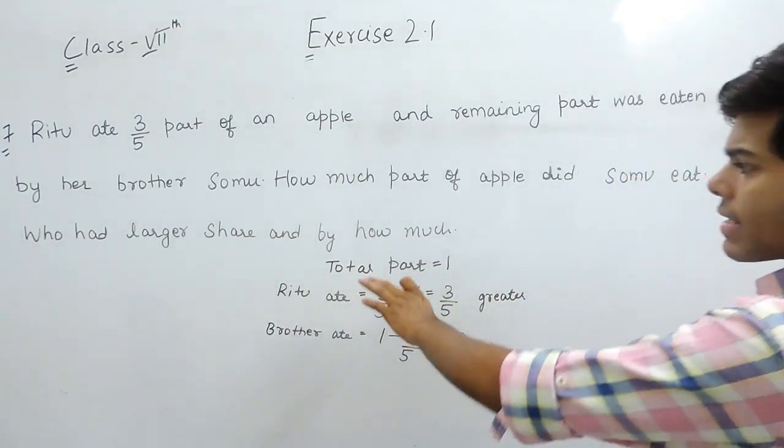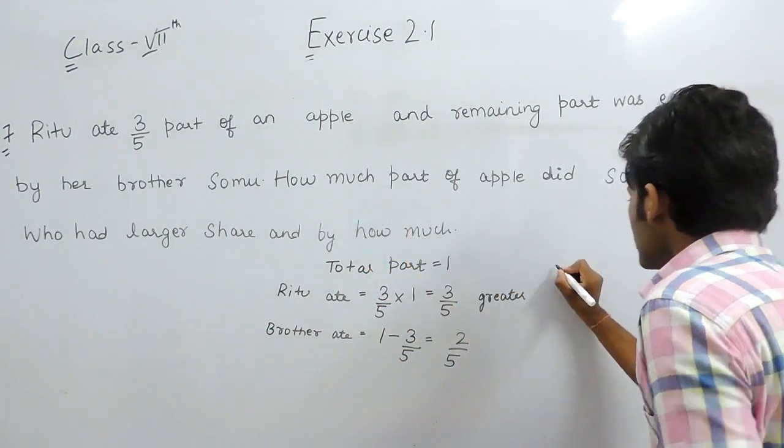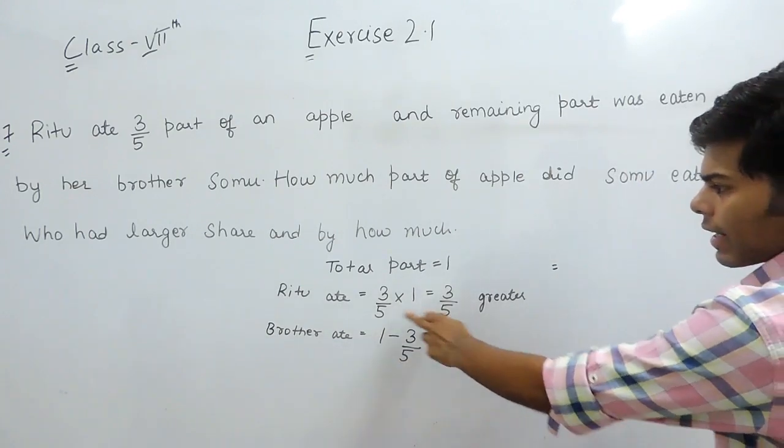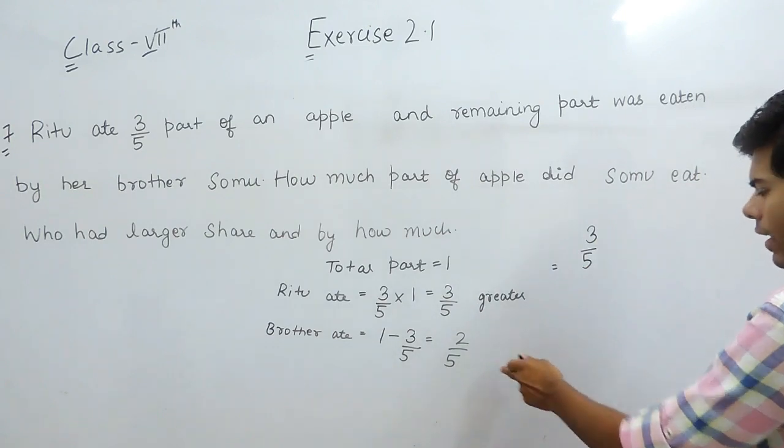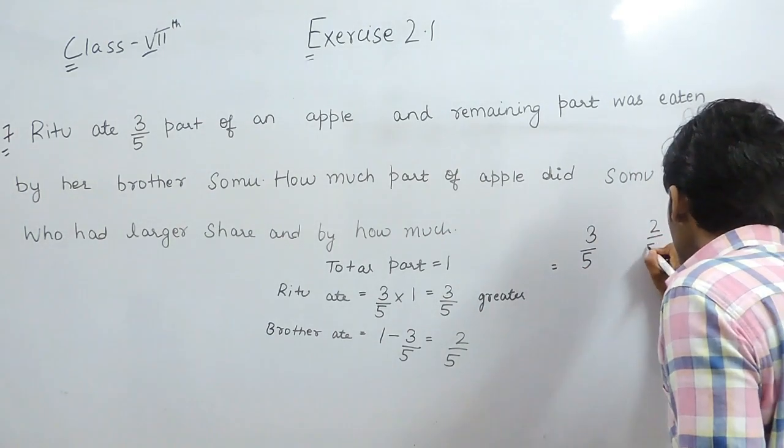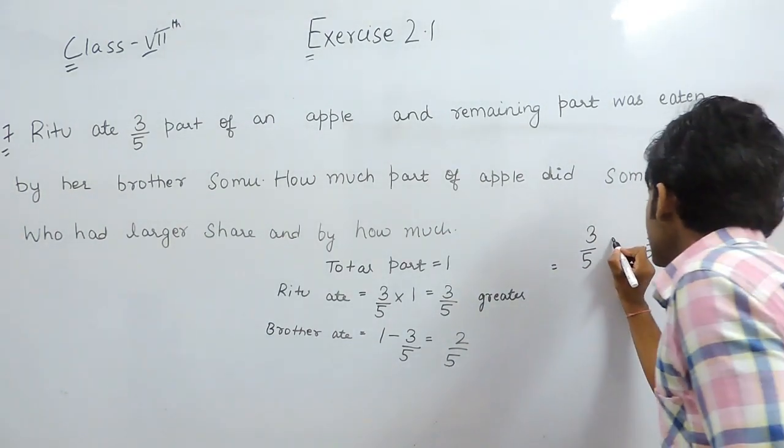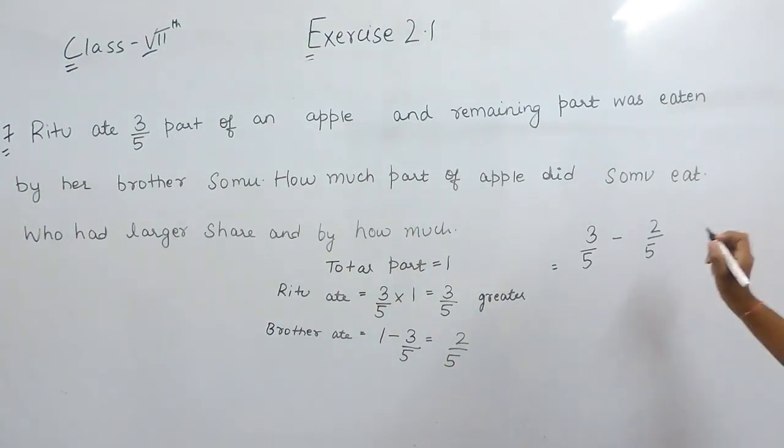And now, the question says, by how much? The greater part is with Ritu, that is 3 upon 5. Her brother ate 2 upon 5. So we will subtract these. Why are we subtracting?